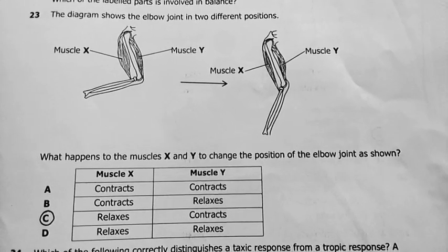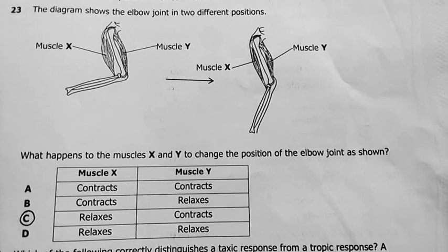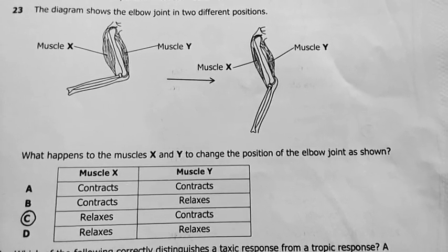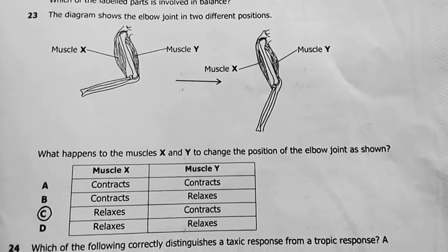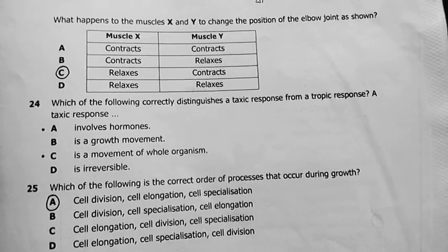The two types of muscles work antagonistically to each other, meaning when one relaxes the other one contracts, and vice versa.